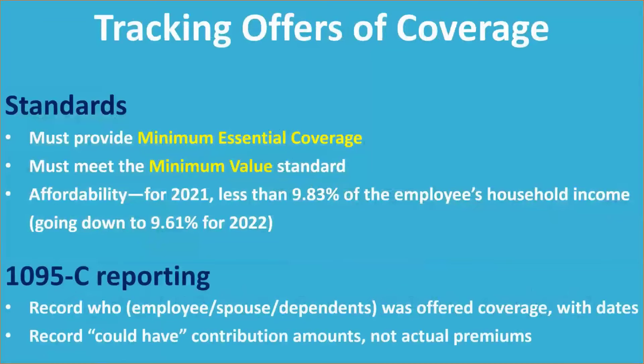Because the affordability standards are adjusted each year, we want to make sure that offers are considered affordable. For 2021, that meant 9.83% of their safe harbor income. That percentage is going down to 9.61% in 2022, which means the employee share needs to be lower, and potentially the employer might need to cover a higher level of contribution to make that affordable.